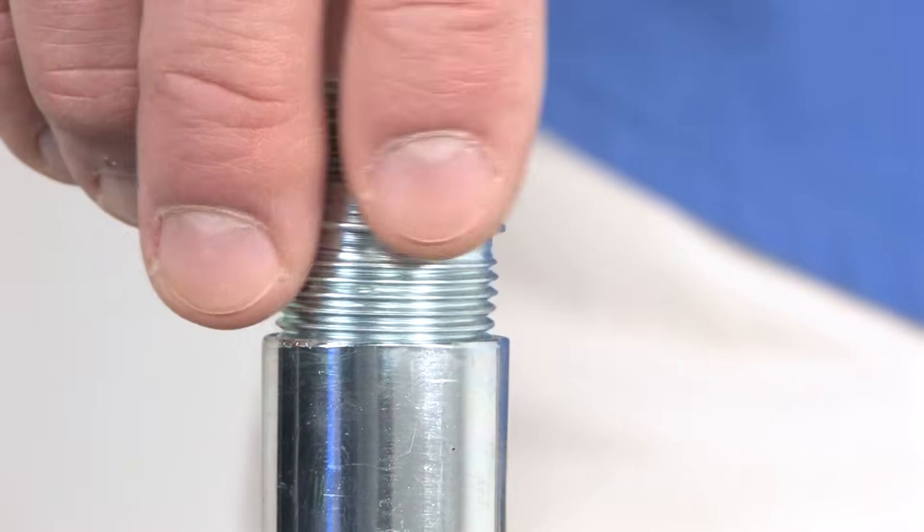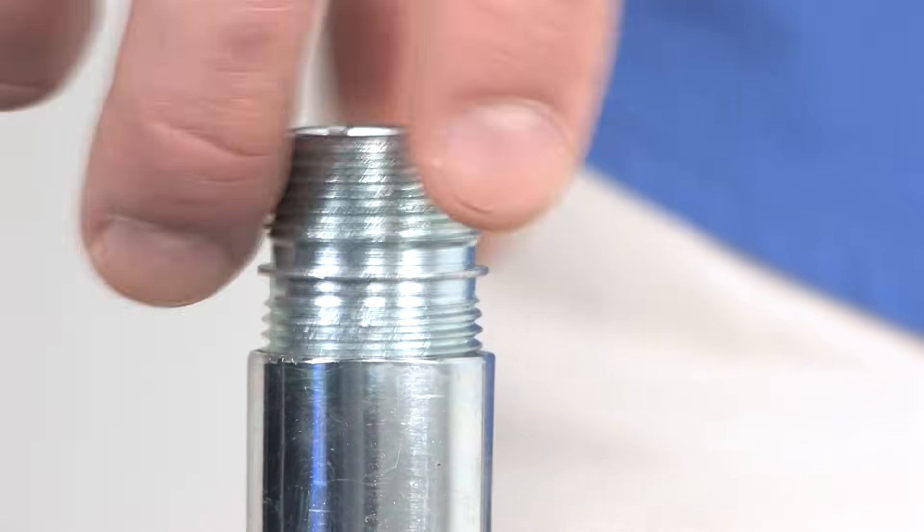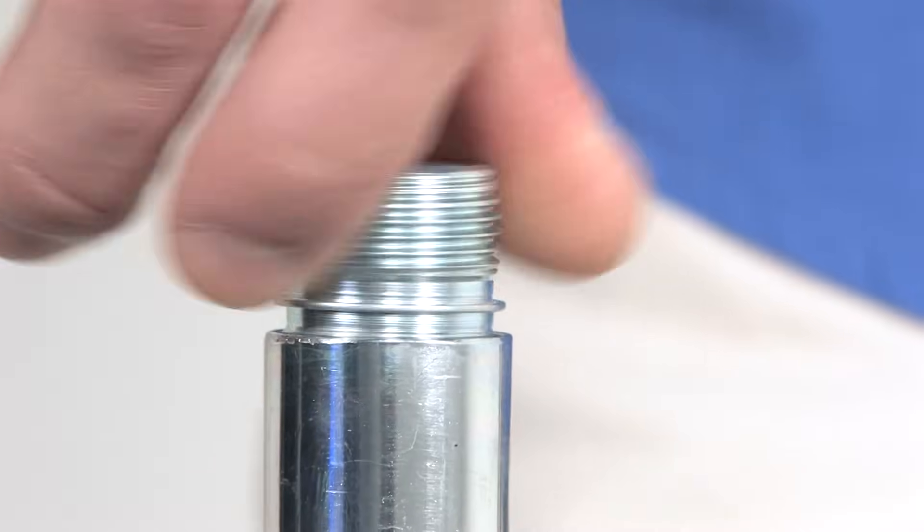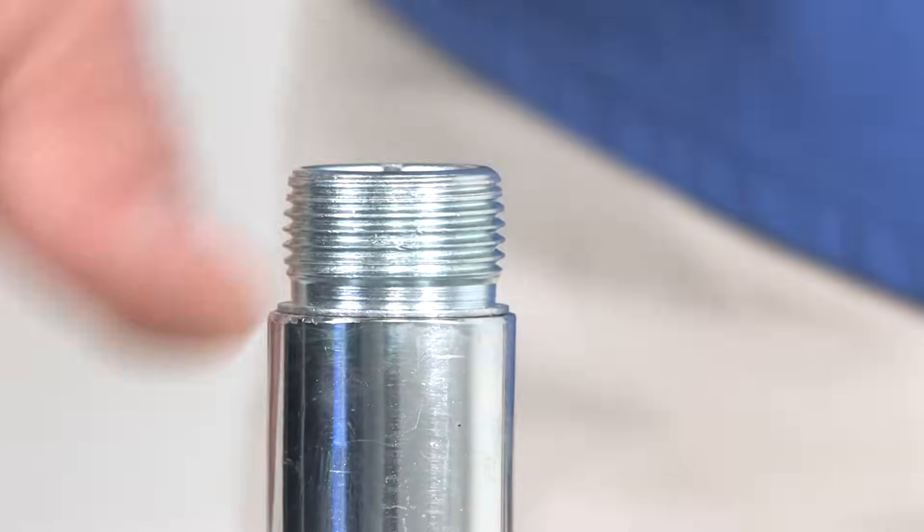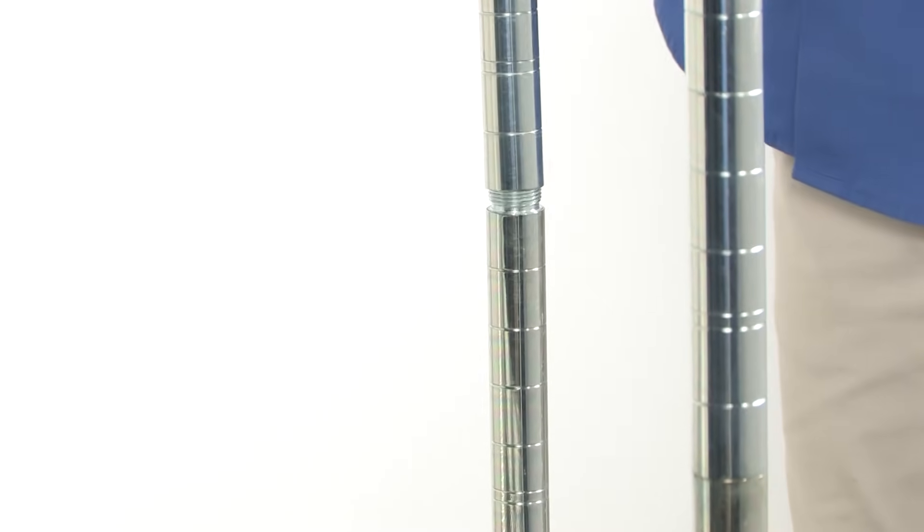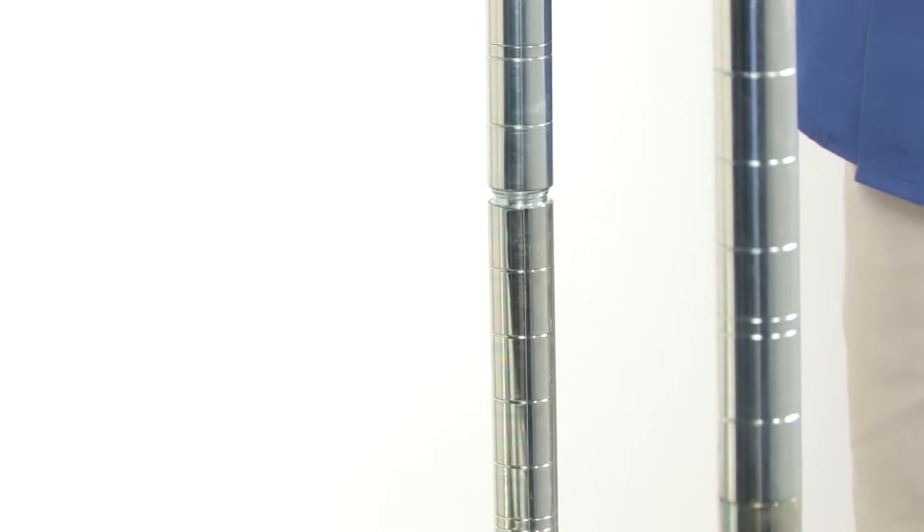For a taller shelf, instead of placing the end cap into the post, use the double thread and twist until secure. Place each leg onto the double thread by turning clockwise. Each leg will lock into position.